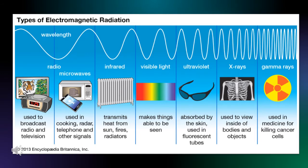The measurement was named after the person who first was able to prove the existence of electromagnetic waves, Heinrich Rudolph Hertz in the 1800s, but it wasn't until the 1970s that the term cycles per second was replaced by the term hertz.